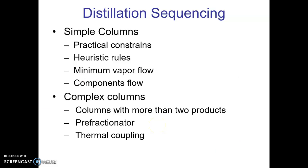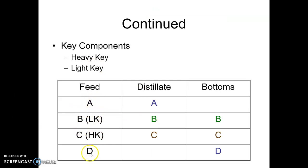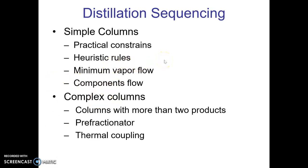When you have more than two species, you need to sequence the columns. For A, B, C, D — lightest to heaviest — the first column could separate A from B, C, D, or B and C could be the light and heavy key, or C and D. That choice determines the first column. After that first separation, say A is removed, leaving B, C, D — and again you choose whether B and C or C and D are the key components for the next column. When there are more than two species, separate sequences are possible for obtaining pure components, which is known as distillation sequencing.